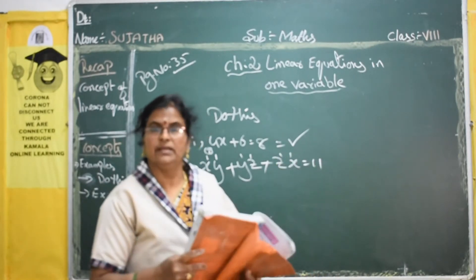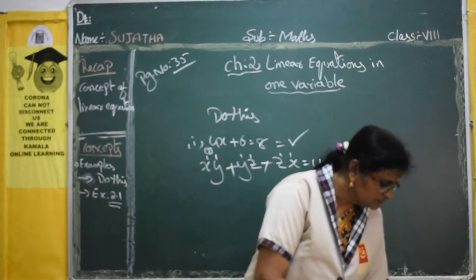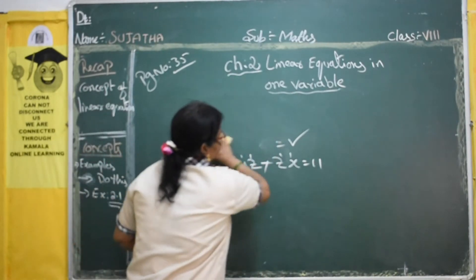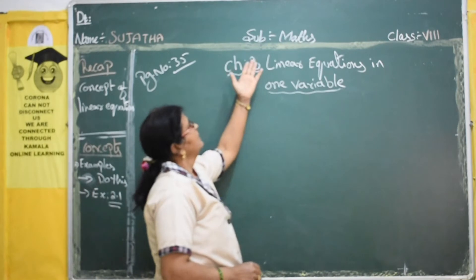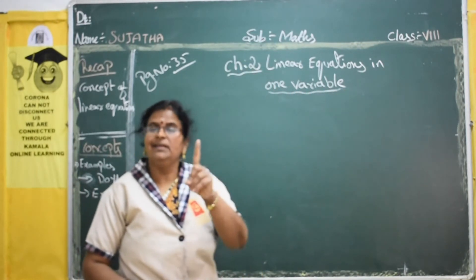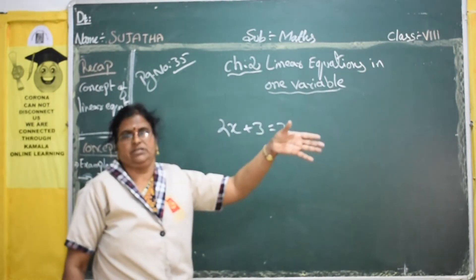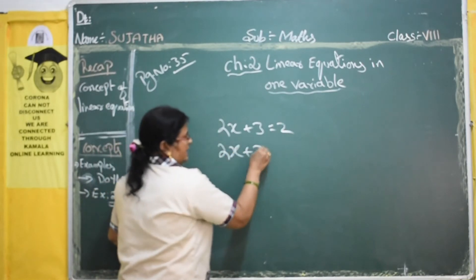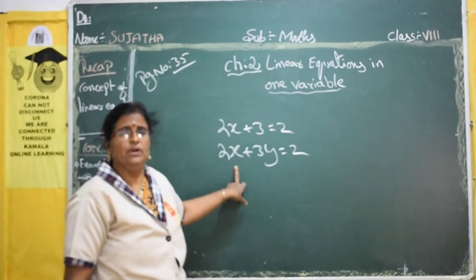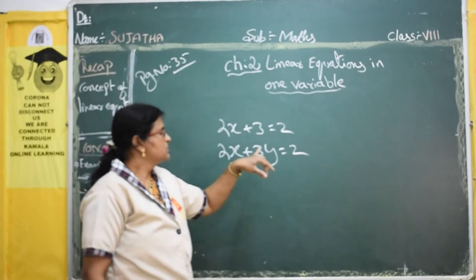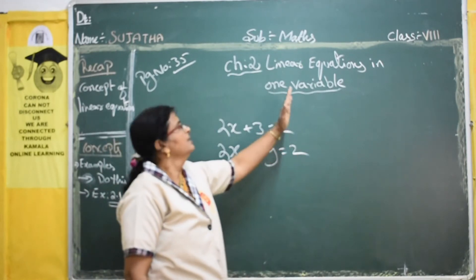How can we solve linear equations with one variable? One more point: what is the difference between a linear equation and a simple equation? There is no difference. A simple equation is nothing but a linear equation in one variable. For example, 2x plus 3 equals 2 is both a linear equation and a simple equation. If there are two variables, it is not a simple equation.